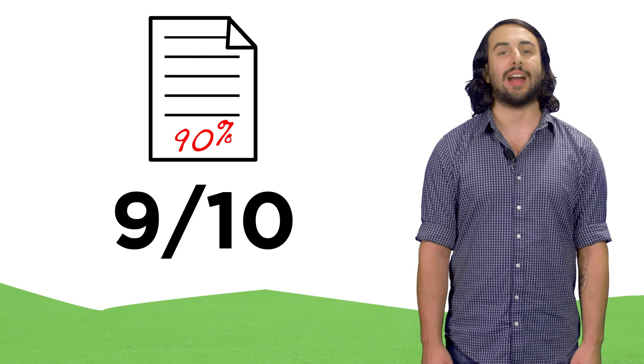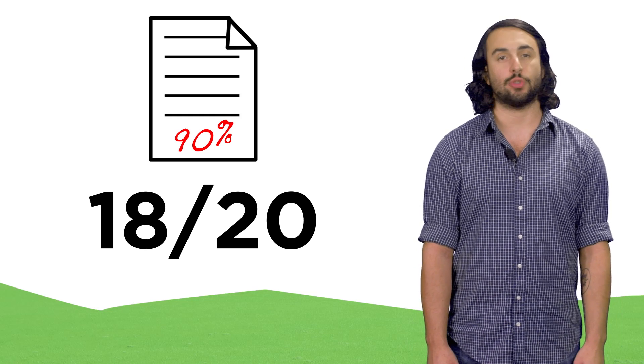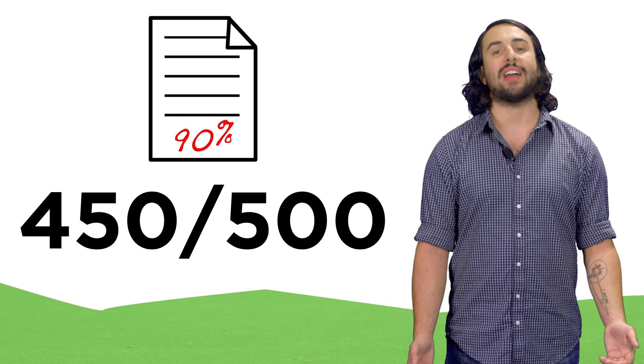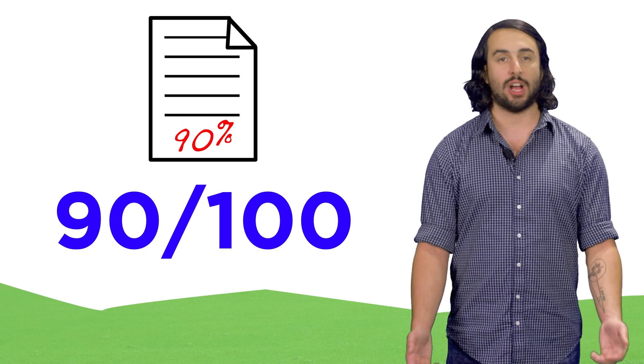If you get a ninety percent on your math quiz, you could have gotten nine points out of ten, eighteen points out of twenty, four hundred fifty out of five hundred, or any other number that obeys this ratio of ninety out of a hundred.